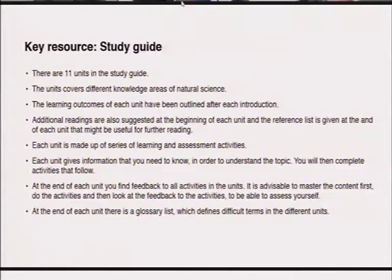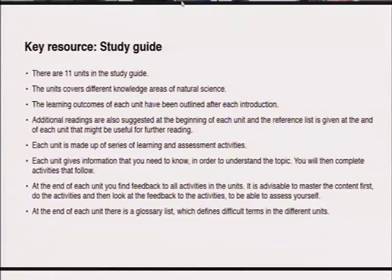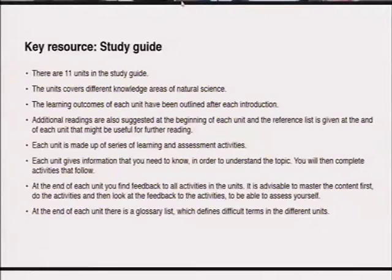The study guide is structured with 11 units covering different knowledge areas of Natural Sciences and Health. The learning outcomes of each unit have been outlined after each introduction. Additional readings are suggested at the beginning of each unit and a reference list is given at the end. Each unit is made up of a series of learning and assessment activities, and we advise students to go through these activities before looking for answers, which are provided as feedback at the end of each unit.